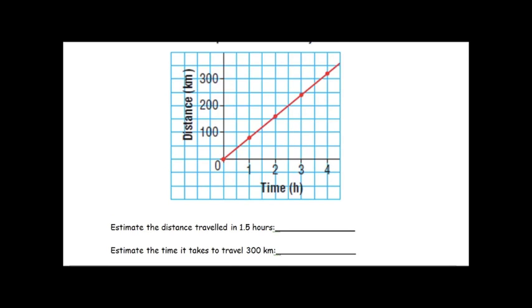So estimate the distance in 1.5 hours. I'm gonna go on this graph and find where 1.5 lies. 1.5 hours lies right about there. So if I'm gonna estimate the distance, I'm just gonna have to go straight up from 1.5 hours, find that point on the graph and then go over to the y-axis.